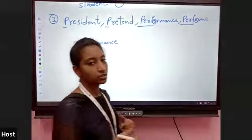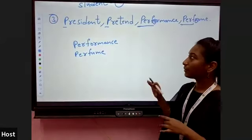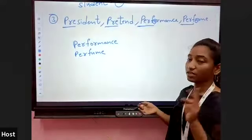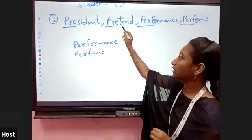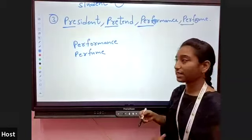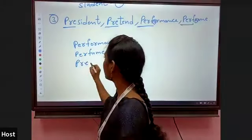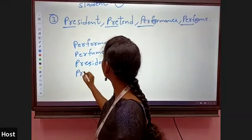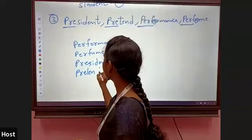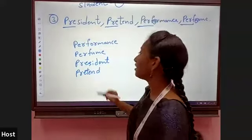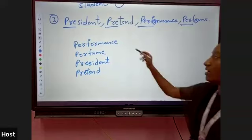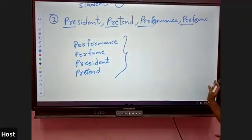Now observe President and Pretend. Their first three letters P-R-E are the same. Observe the fourth letter: S in President and T in Pretend. S comes before T, so President is in third position and Pretend is in fourth position. So the final dictionary order is: Performance, Perfume, President, Pretend. This is the dictionary order of the given words.